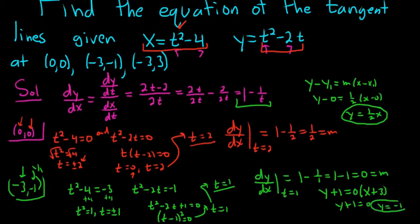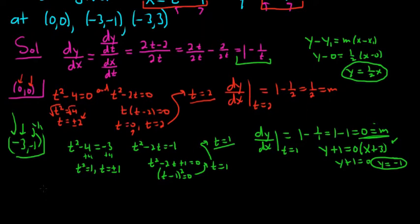In fact, we didn't even need to do this. Because look, we have a slope of 0, and we know it passes through this point. If it passes through negative 3, negative 1, and it has a slope of 0, it must be a horizontal line there. So it must be y equals negative 1.